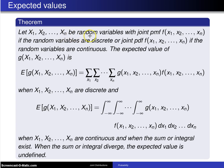Let X₁ up to Xₙ be random variables with joint probability mass function f of x₁ through xₙ if the random variables are discrete, or joint probability density function f of x₁ up to xₙ if the random variables are continuous.